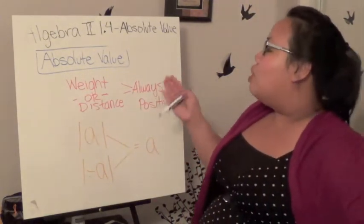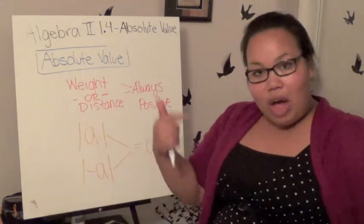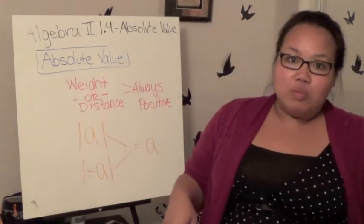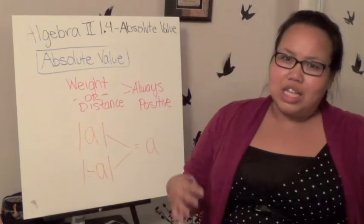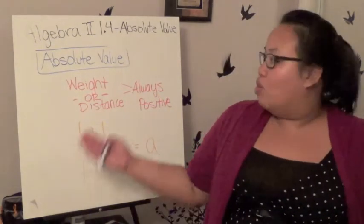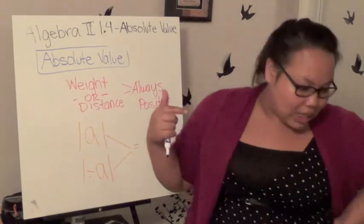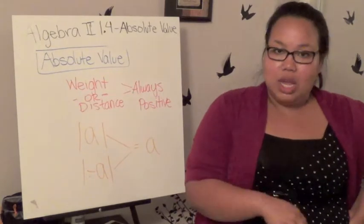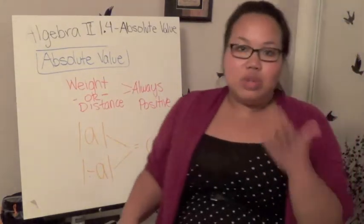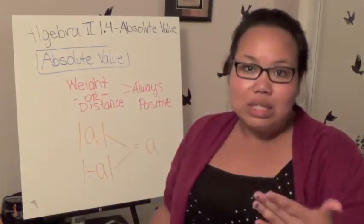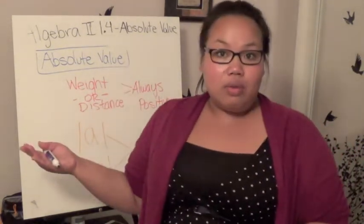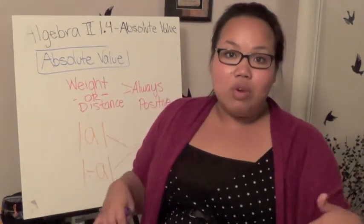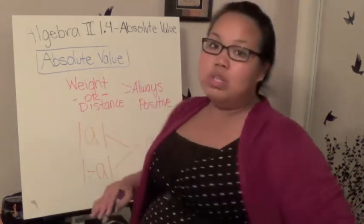Basically, absolute value is used to represent things like weight or distance. For example, if I walked two steps this way and two steps back, it doesn't mean I return to zero. I traveled a total of four steps because it's always positive. If I traveled three steps backwards, I don't go negative three, I just travel three. The distance is always positive. Same thing with weight - you can't go negative weight because once you hit zero, that's it.